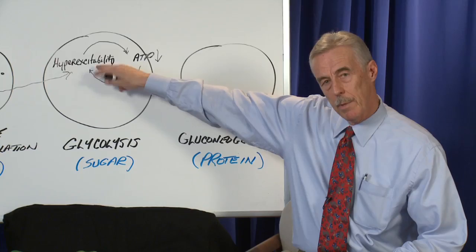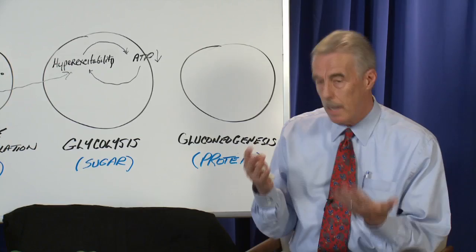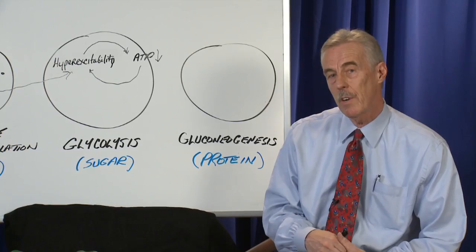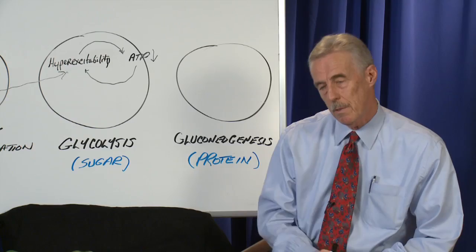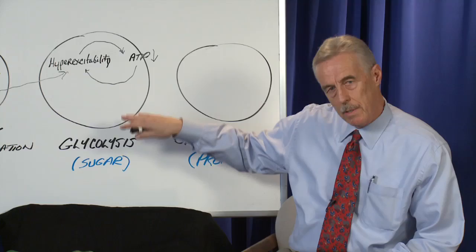Too much hyperexcitability starts that cascade, and it eventually can turn into death of a cell. The other alternative is the cells can become more independent, and we call that de-differentiation. De-differentiation means that the cell loses its identity of what it started as and turns into more of an independent cell, which eventually could lead to cancer.